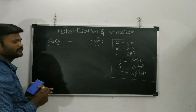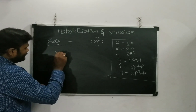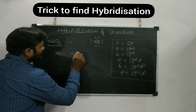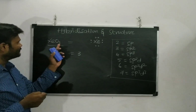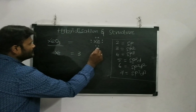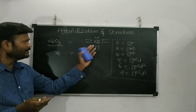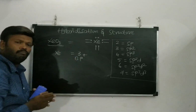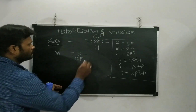Let us discuss the structure and hybridization of XeO3. Xenon is the central atom, and three oxygens are attached to it. Oxygen is a divalent atom, so three oxygens take up six electrons, giving us three bond pairs. What about the lone pairs? Only one lone pair remains — two electrons remaining, counted as one pair.